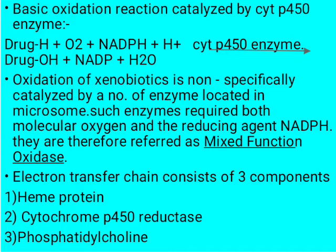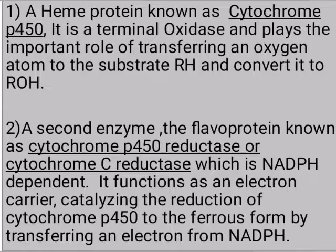The electron transfer chain consists of three components: the heme protein cytochrome P450, cytochrome P450 reductase, and phosphatidylcholine. The heme protein cytochrome P450 is a terminal oxidase and plays the important role of transferring an oxygen atom to the substrate R-H, converting it to R-OH. A second enzyme, the flavoprotein cytochrome P450 reductase (also known as cytochrome C reductase), is NADPH-dependent and functions as an electron carrier, catalyzing the reduction of cytochrome P450 to the ferrous form by transferring an electron from NADPH.